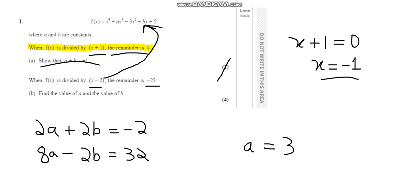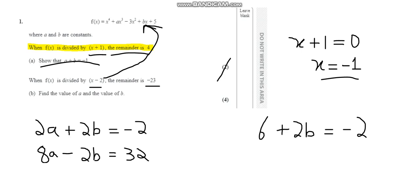Now to find b, I'll take the first equation and plug in a equals 3. So 2 times 3 gives 6, and 6 plus 2b equals minus 2. Subtracting 6 from both sides gives 2b equals minus 8. Dividing both sides by 2 gives b equals minus 4. We have found the values: a equals 3 and b equals minus 4.